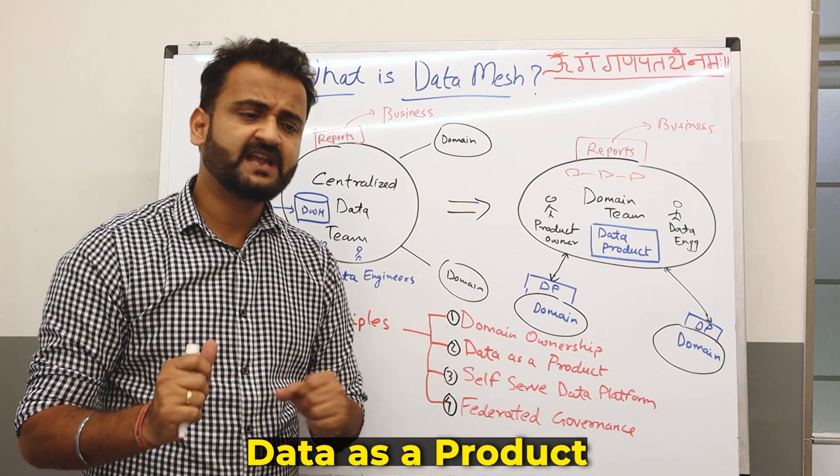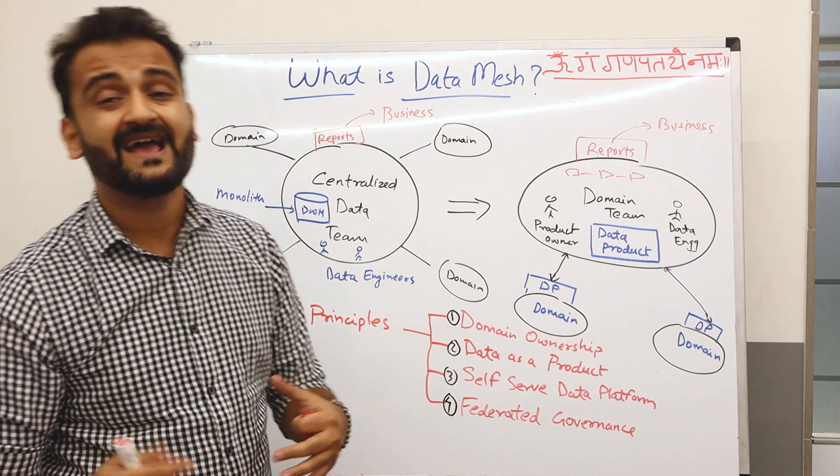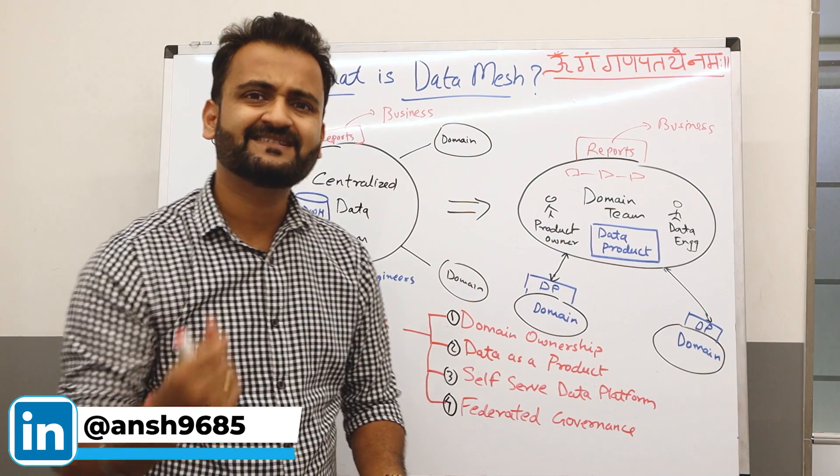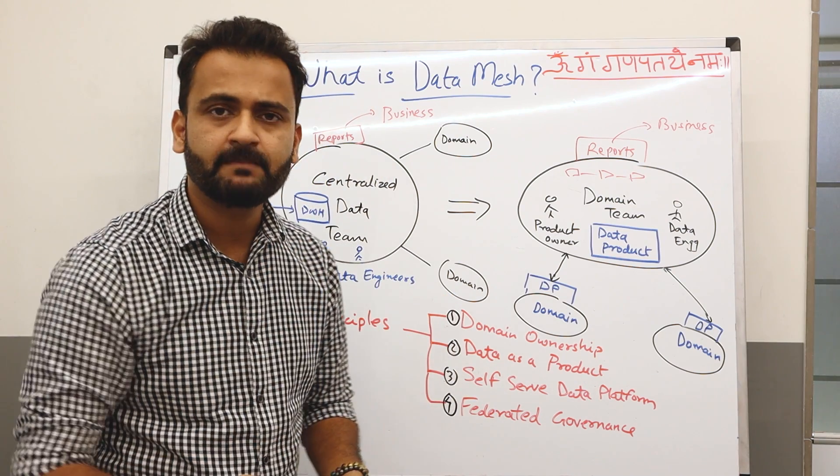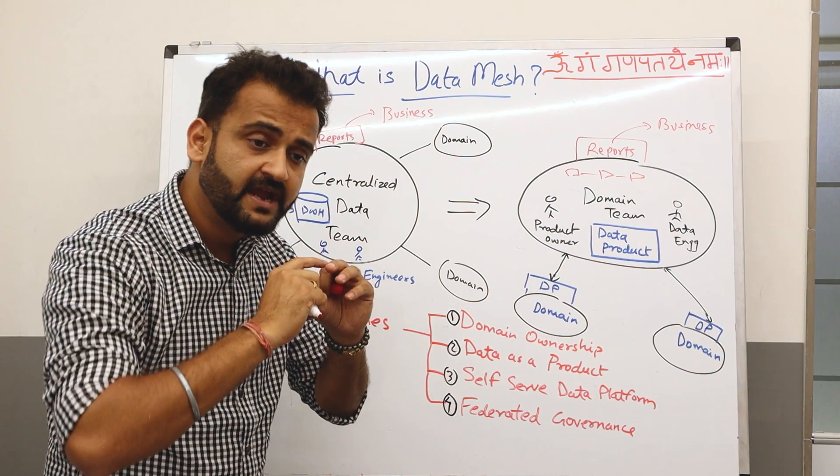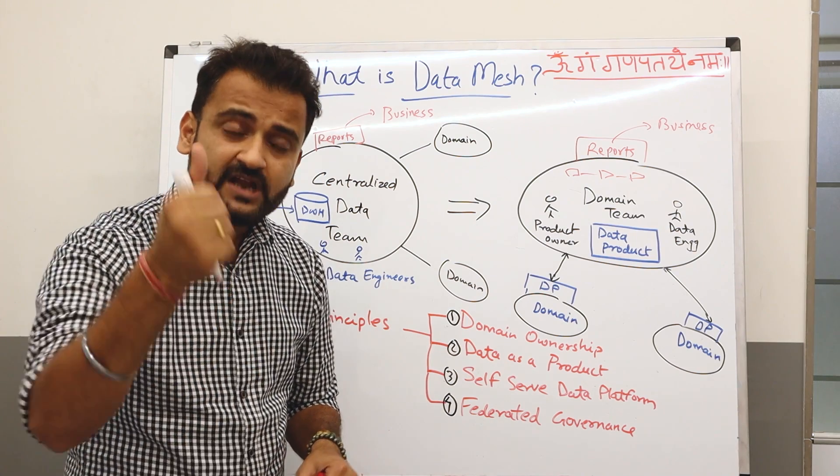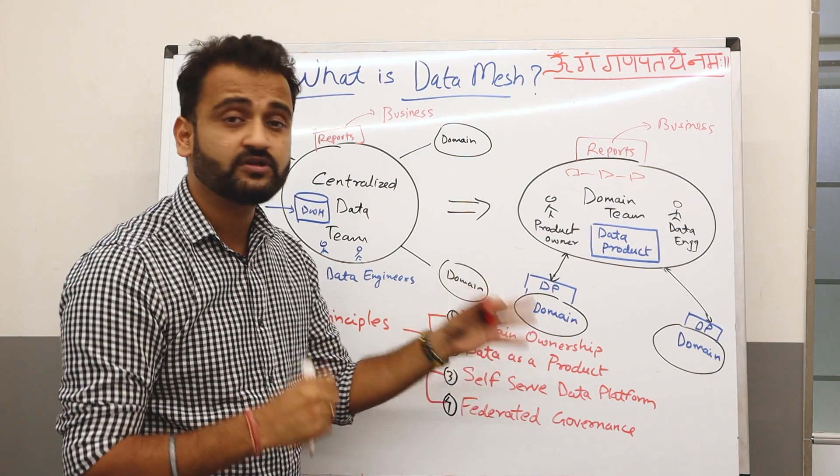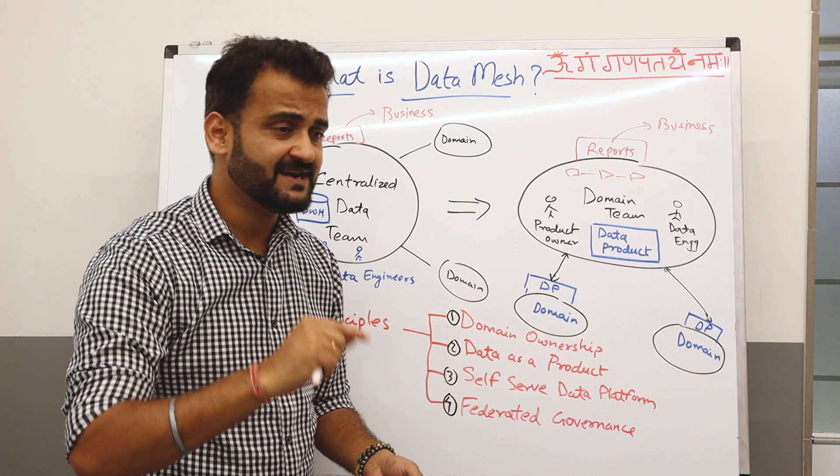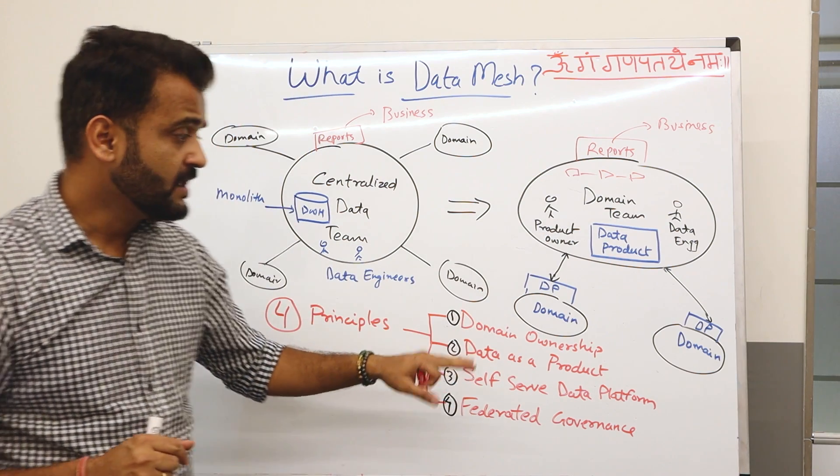Second, data as a product. For a very long time, data has been an important asset to a company, but they have never treated it as a product. They have always treated data as an entity, as an enabling thing to help them take better decisions. But the moment you think about data as a product, the whole data product life cycle comes into picture. You could envision what you want to see, what is your product roadmap, what kind of new products you want to build around the data you have. So it's a completely different mindset. And that's what I said, that more than technology, it's your mindset which needs to change when it comes to Data Mesh.